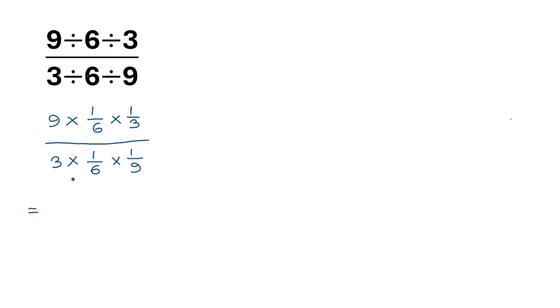This 1 over 6 and this 1 over 6 will cancel out, and here it will remain 9 times 1 over 3, so it will be 9 over 3, divided by this 3.